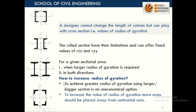To achieve a large radius of gyration in both directions, one uneconomical option is to use a larger section. Instead, what we do is increase the radius of gyration by placing more area away from the centroidal axis. For example, we keep this angle section away from the centroidal axis — this is how we play with the radius of gyration.